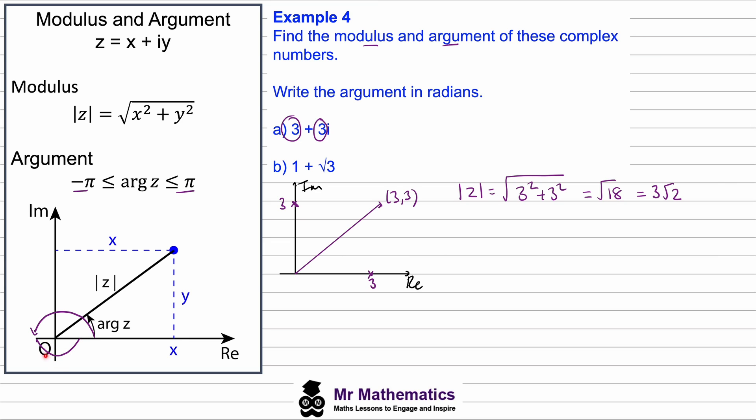So in this case, the argument would be the anti-clockwise direction from the real axis, which we'll call theta. We can work out theta because we have the opposite side of 3 and the adjacent side of 3, so tan θ will be the opposite over the adjacent, so θ will be the arctan of 1, so θ will be π/4.